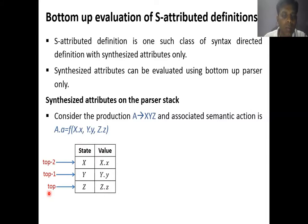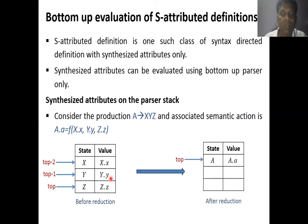The stack looks like: top, top minus one, top minus two. Whenever I encounter the handle X, Y, Z, I directly replace it with A. When replacing with A, at the same time I calculate the value of A.a. The value is calculated based on the function from x.x, y.y, and z.z. That value of A.a is stored into the top of the stack. So the grammar symbol becomes A and the value becomes A.a.